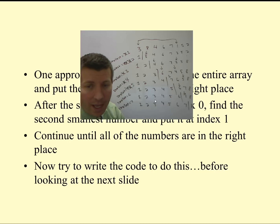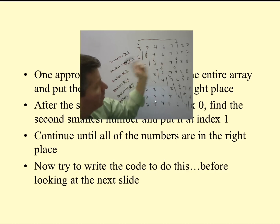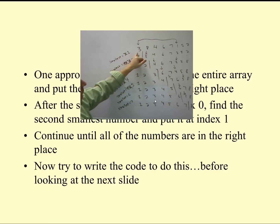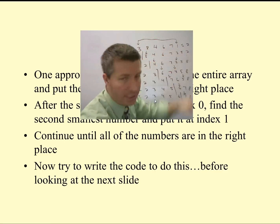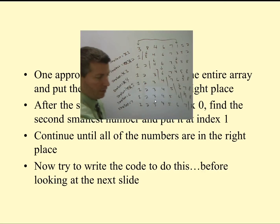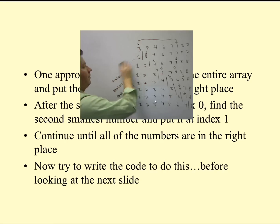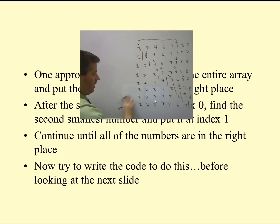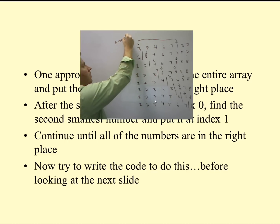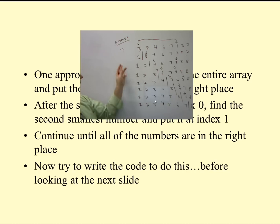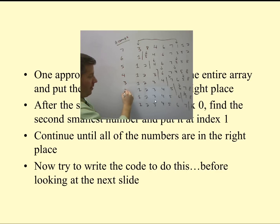So this is one type of sorting algorithm. You can see how many steps it took. We had comparisons throughout all of these. The first time through we had 7 comparisons. On the second pass, 6 comparisons. You can probably see what the pattern is going to be for the number of comparisons on each of those lines.